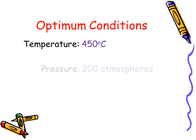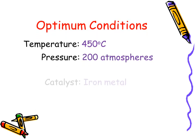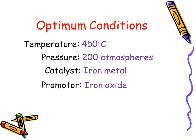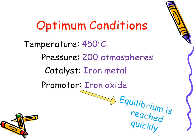The optimum conditions set for Haber's process are a temperature of 450 degrees Celsius and pressure of 200 atmospheres. Iron metal is used as a catalyst and iron oxide as a promoter to enhance the catalytic activity so that equilibrium is reached in a lesser time.